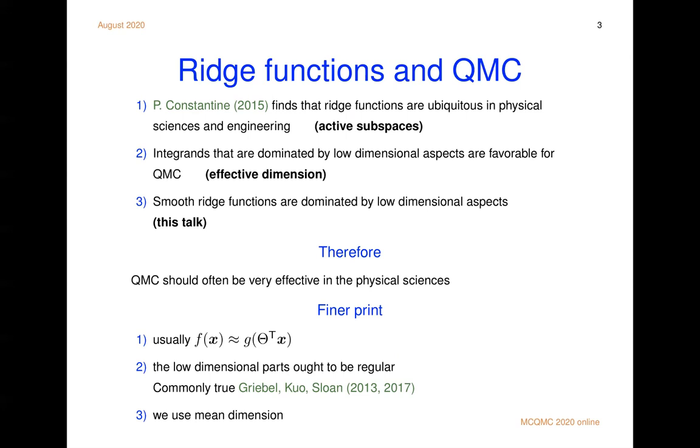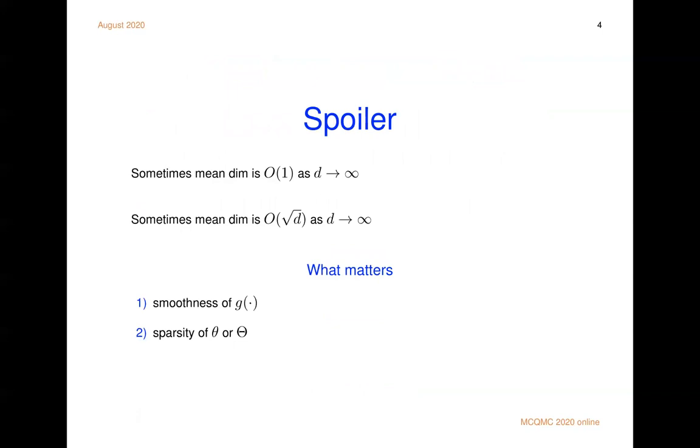Let me spoil the storyline. What we find is that sometimes the mean dimension is just constant, or big O of one, as d goes to infinity. As the nominal dimension grows, the mean dimension remains bounded. Other times, the mean dimension can be seen and shown to grow like the square root of the nominal dimension. Those are quite different. And what makes the difference?